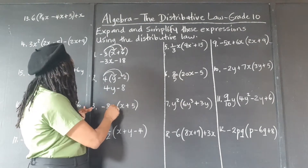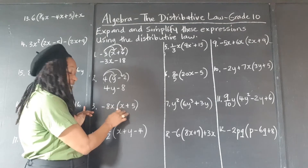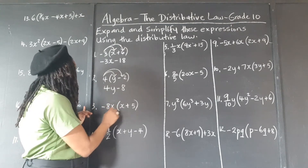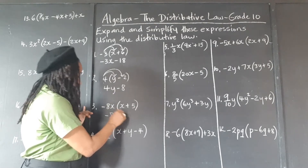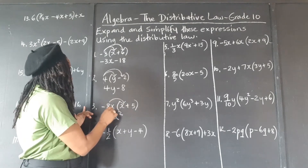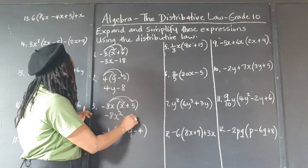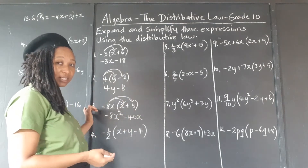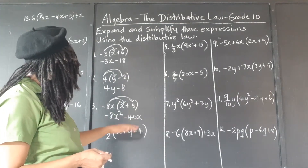Negative 8x times x — remember, we're multiplying the x's. x times x is x squared. So negative 8x times x is negative 8x squared. Negative 8x times 5 is negative 40x. Negative 8x times positive 5 is negative 40x.